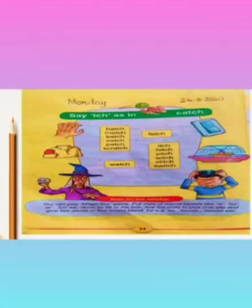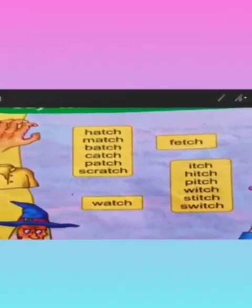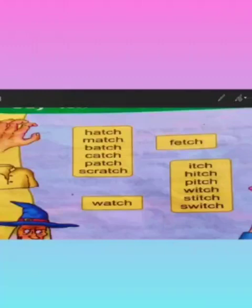Say t-c-h as in catch. Let's read. The first word is hatch. Hatch means when the young ones come out of the egg — it is called hatch. Next is match. Match is a cricket match, a football match, or match is also a matchstick which you see in the matchbox.